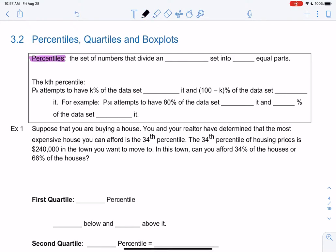A percentile is the set of numbers that divide an ordered set into 100 equal parts, and that's because of percents. Percents are out of 100, so that's where the 100 equal parts comes from.